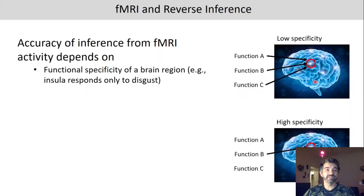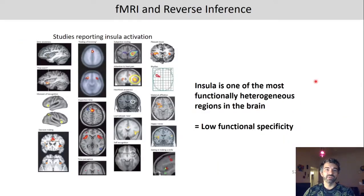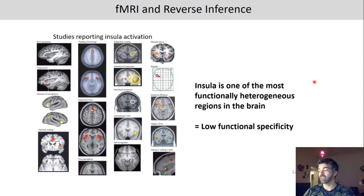If we ensure high functional specificity, high consistency, and high spatial correspondence, we can reduce the risk of making inferences that are not true. The insula is actually one of the most functionally heterogeneous regions in the brain, showing low functional specificity. So those two studies I discussed were probably not great at providing conclusive data on their claims, because they targeted a brain area with very low functional specificity.